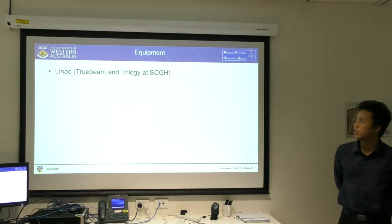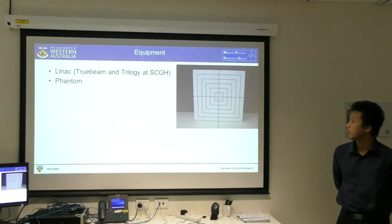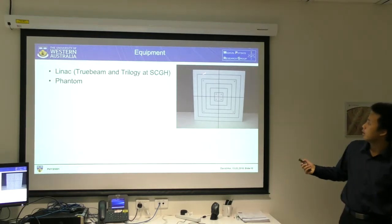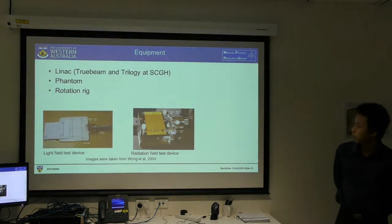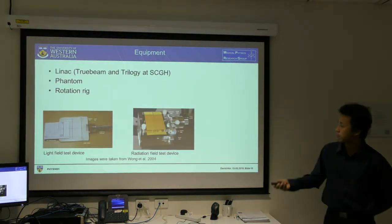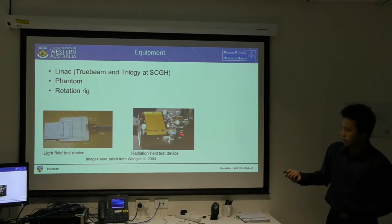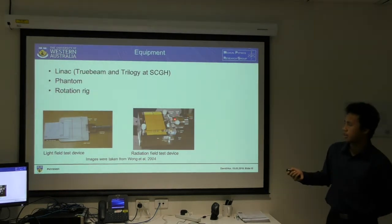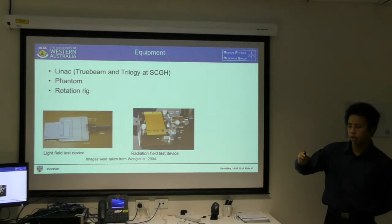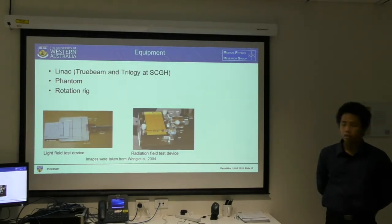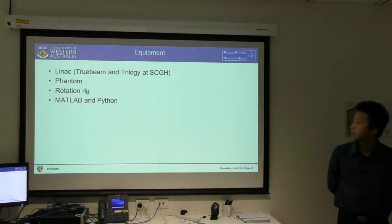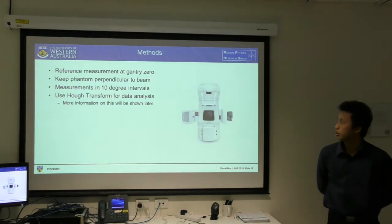The equipment includes the Varian TrueBeam and Trilogy LINACs located here, a phantom with eight ball bearings as shown, and the rotation rig from Wong — that's the light field and radiation field test fixture which connects to the couch, with dials that you rotate to try to match the perpendicular angle. MATLAB and Python are equipment as well.